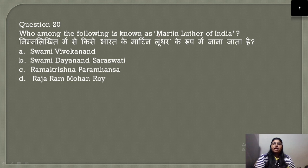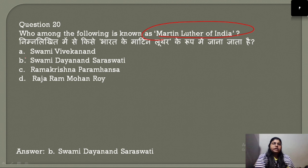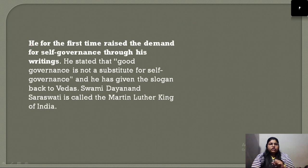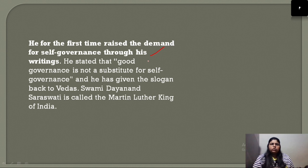Question number 20: Who is known as the Martin Luther of India? Swami Dayanand Saraswati is known as the Martin Luther of India. This is because he was the first person who demanded self-governance through his writings, saying 'Good governance is not a substitute for self-governance.' This famous slogan is why he earned the title of Martin Luther of India.